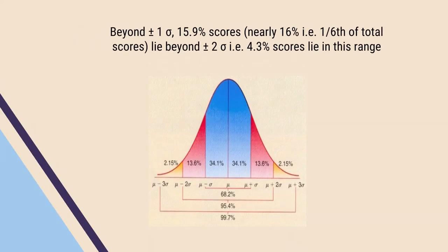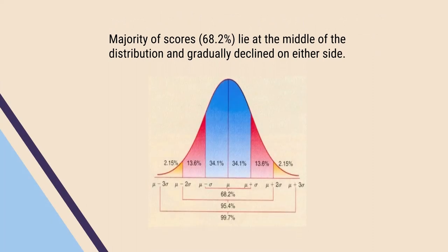Beyond plus 1 sigma and minus 1 sigma, there are only about 15.9 percent of the scores on each side. Nearly 16 percent — about one-sixth of the total scores — lie beyond plus 1 sigma and minus 1 sigma. About 4.3 percent of scores lie beyond plus 2 sigma and minus 2 sigma. Majority of the scores, that is 68.2 percent, lie at the middle of the distribution and gradually decline on either side. From Table A, the percentage of scores lying between the mean and different sigma distances can be estimated, confirming about 68 percent within plus 1 sigma and minus 1 sigma, with the remainder beyond those extents.